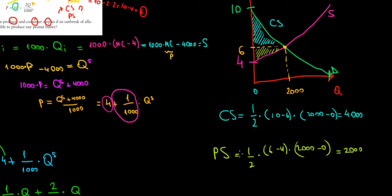And yeah, that's it. The producer surplus 2000, the consumer surplus 4000, and we are done.